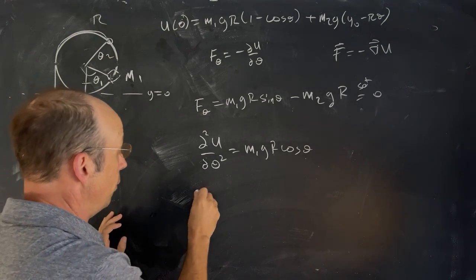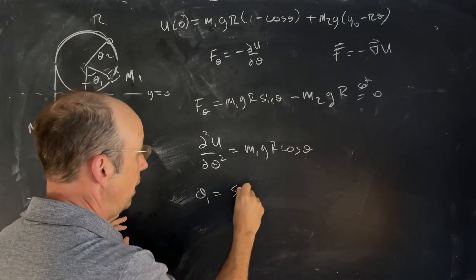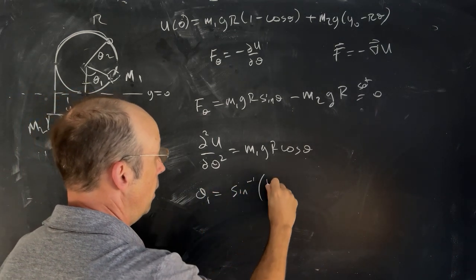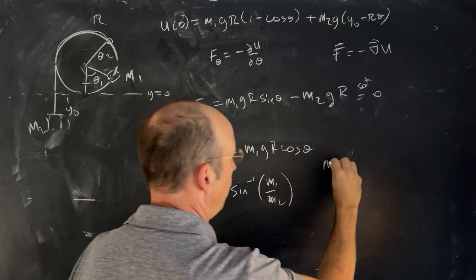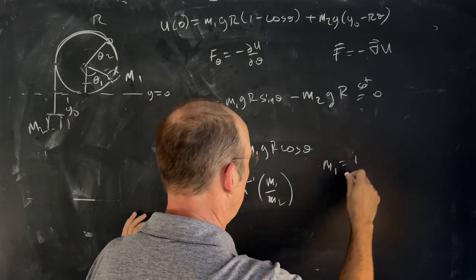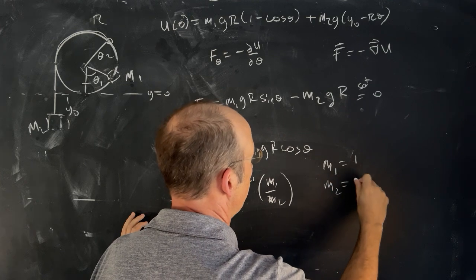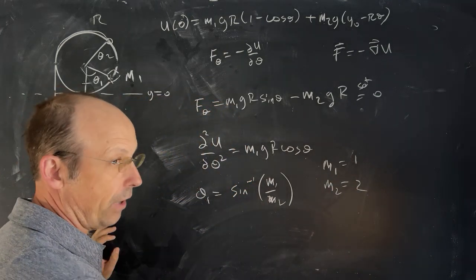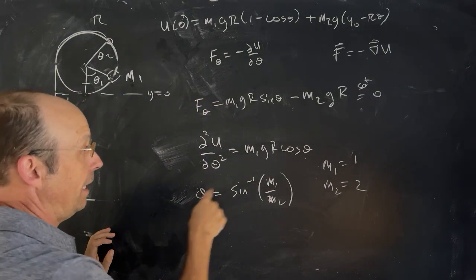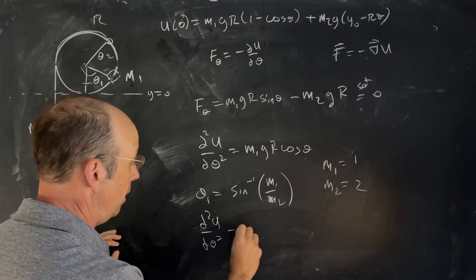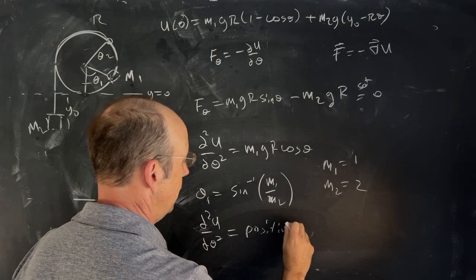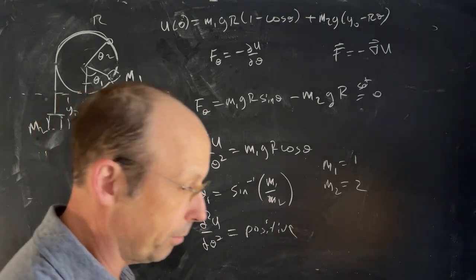So if I take my original value, theta 1 was the inverse sine of M2 over M1. And let's say M1 equals 2, M2 equals 1. It doesn't really matter. So that's 0.5. And then if I take that angle and put it in there, I get the second partial of U with respect to theta is positive. You can test it. And so that means it's stable equilibrium.